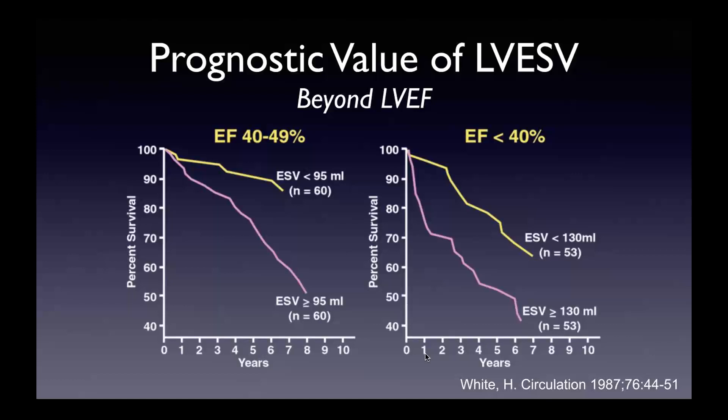The prognostic value of LV EF goes beyond the ejection fraction measurement and into volume, so the measurement of volumes actually becomes important as well. This is an old study from Harvey White from 1983 showing that even within a certain class of ejection fraction — say mildly reduced EF 40 to 49% or more moderate to severe LV systolic dysfunction less than 40% — if your end-systolic volumes are greater, your survival is less.